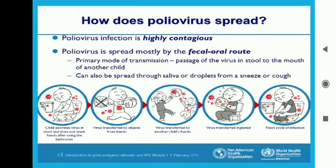In this picture, you will see its transmission. It is a highly contagious infection spread by the fecal-oral route. The primary mode of transmission is passage of the virus in the stool to the mouth of another child, meaning if there are not good hygienic habits, it could be transferred to the mouth of another child.